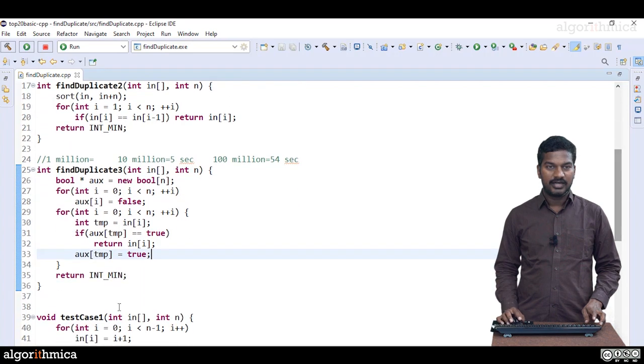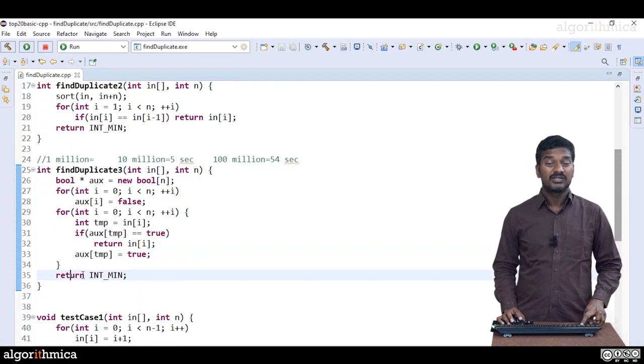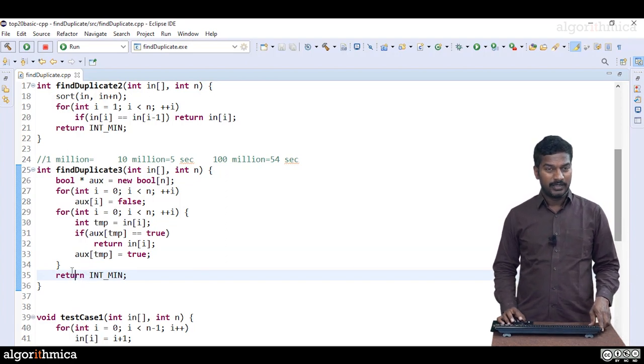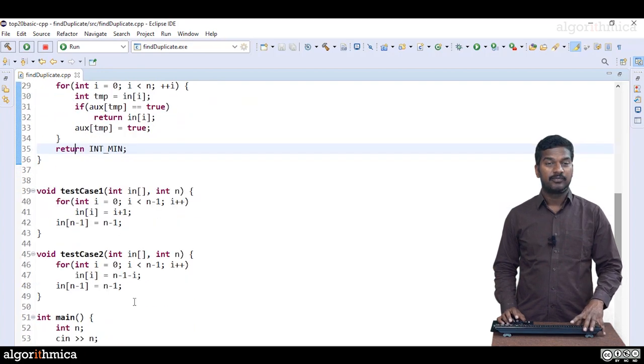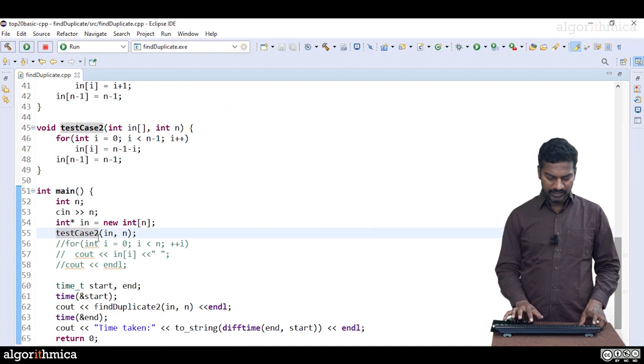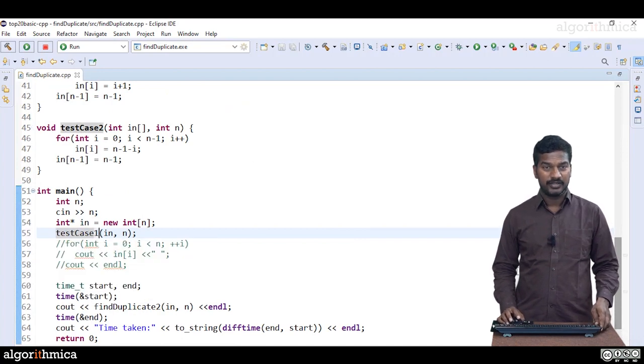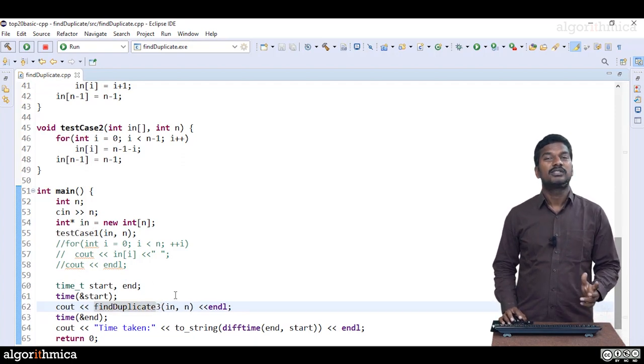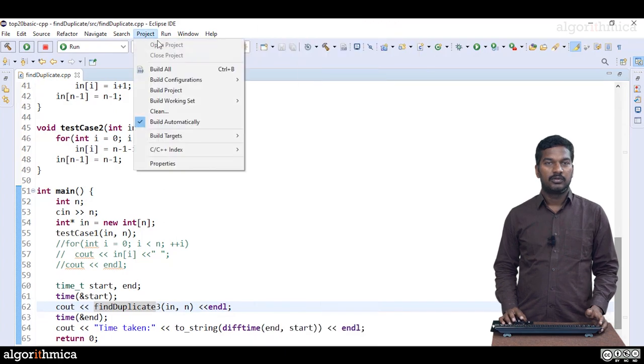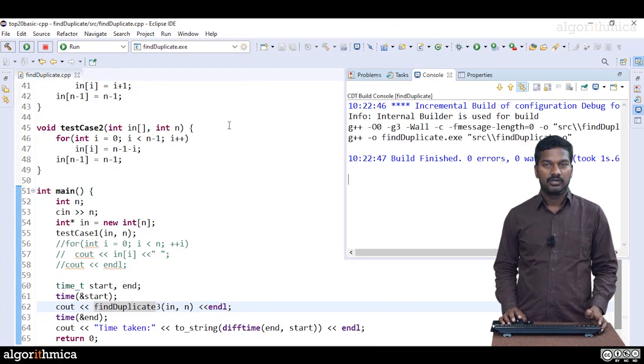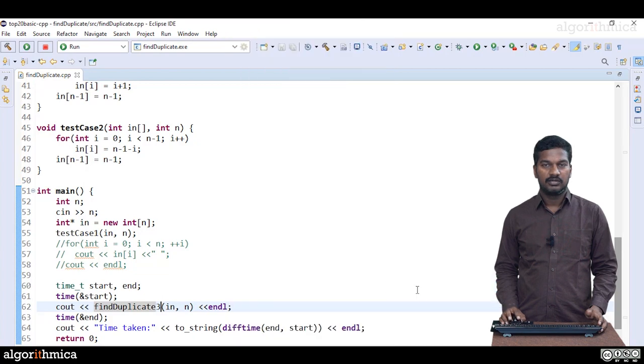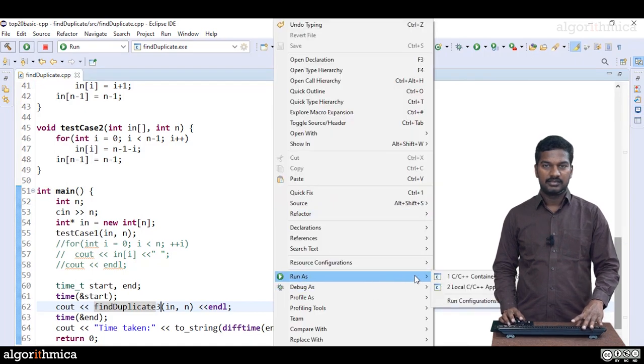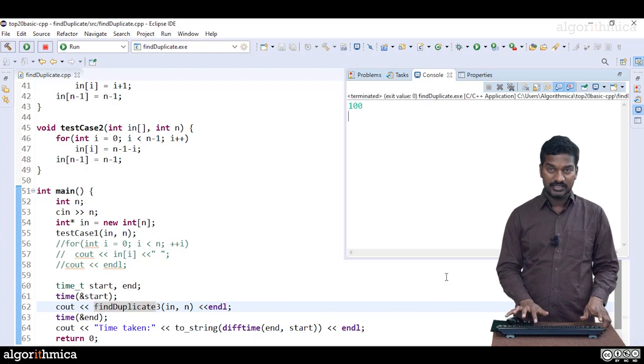Now if nowhere you can find this - in this problem it doesn't happen, but still just to avoid compilation error, we write this dummy return statement. Let's test this. I keep test case one here because that is the worst case scenario. findDuplicate3. First we see the correctness, then we go to scale. Project build project. Now run as local C++ application: 10 elements, 9, no issue. Run as local C++ application: 100 elements, 99 is working fine.